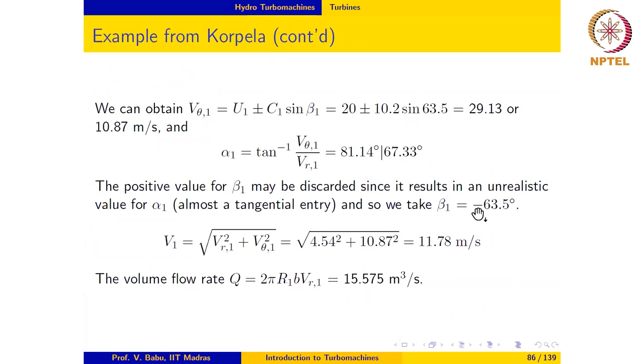We take β1 equal to minus 63.5 degrees. The absolute velocity at inlet may be evaluated using Pythagoras theorem and it comes out to be 11.78 meter per second. The volume flow rate at entry may also be calculated as 2πr1 times the height of the rotor times the radial velocity at inlet, which gives us 15.575 meter cubed per second.